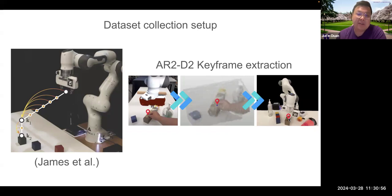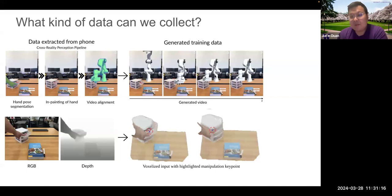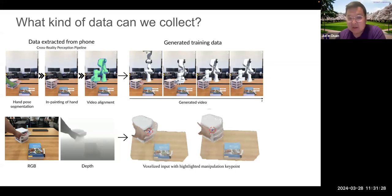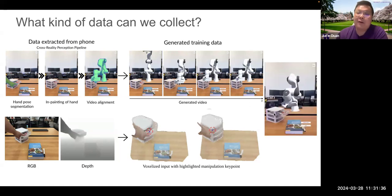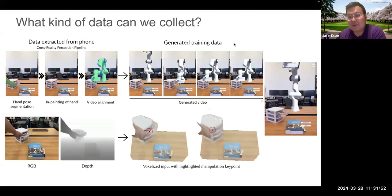The dataset collection setup works this way: human's hand represents a 6-DOF position matching the robot's end effector, including gripper open/close state. Every position becomes a key point, and between key points data is generated to train behavior cloning models like PerceiverActor in a supervised manner. We collect two kinds of data: for 2D-based models, we do hand pose segmentation, inpaint the hand away, and do video alignment to generate trajectory videos for RGB learning. For 3D-based models, we use the depth information where the human hand represents key points.